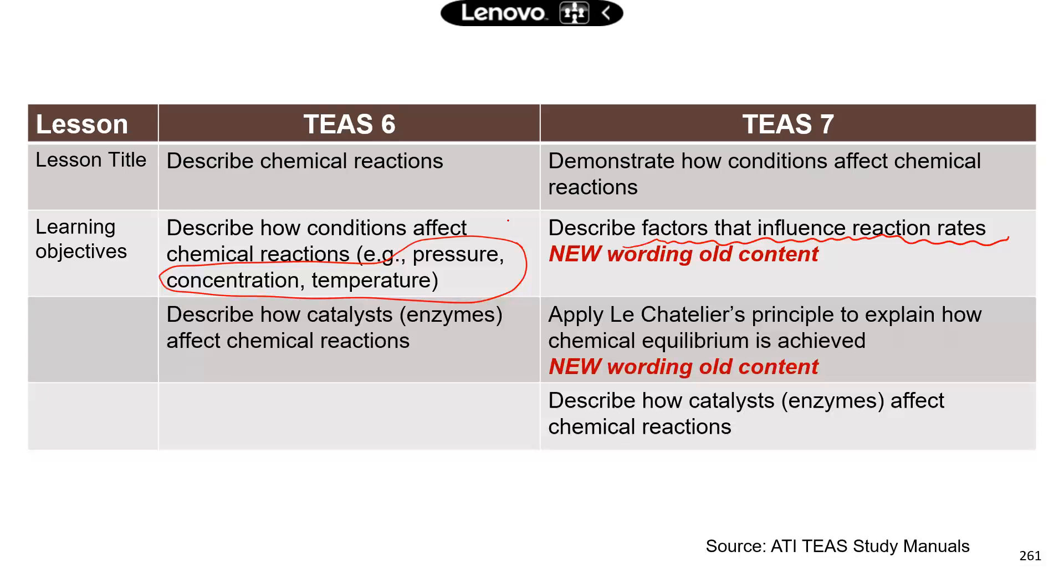And the next one I do want to focus on in today's lesson, and this is about applying Le Chatelier's principle to explain how chemical equilibrium is achieved. I don't think that was a major thing in TEAS 6. So we're going to talk about what this principle is, and when you see a question, certain changes in the conditions, you can predict how this chemical equilibrium is going to change. Is the chemical reaction going to move to the left or to the right?